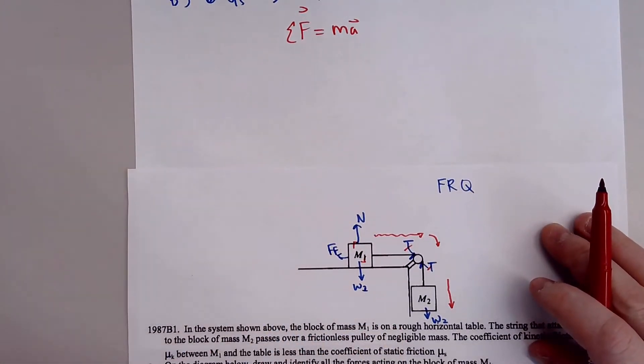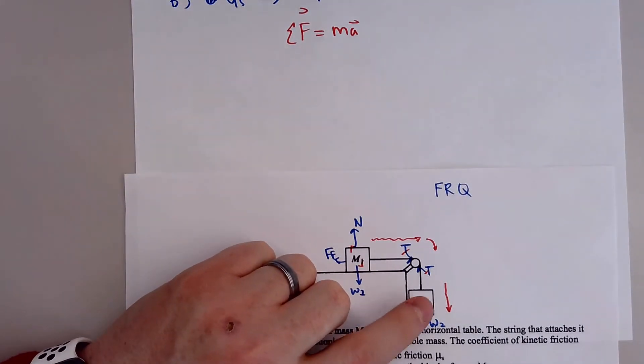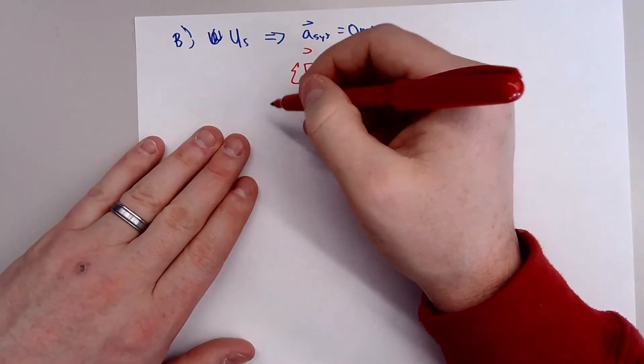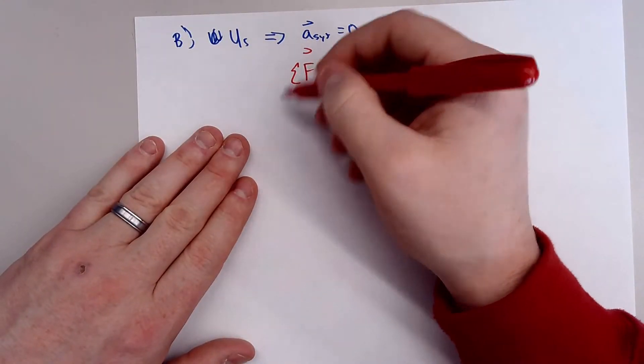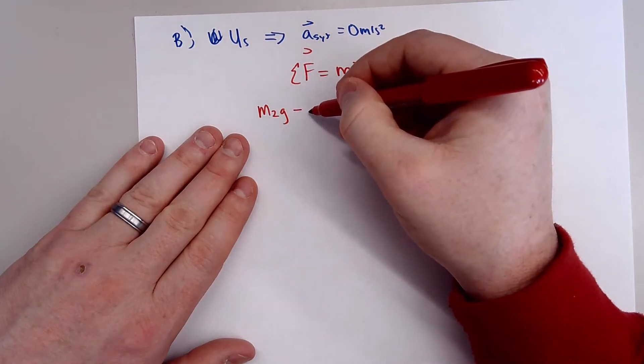But notice these are perpendicular to that motion. So we don't really account for those. So really, the only two forces that are acting on this system are the weight of the M2 block and the force of friction on the M1 block. So we can actually write this out.